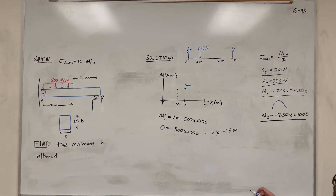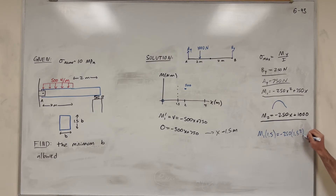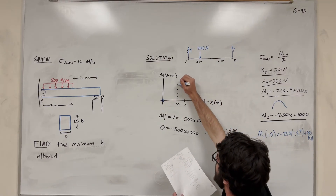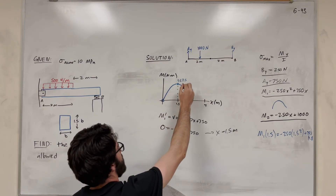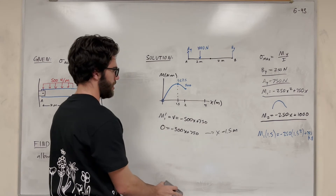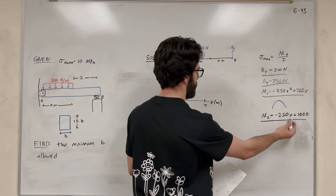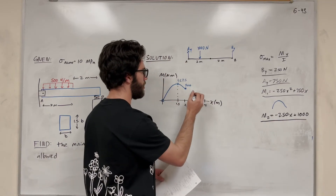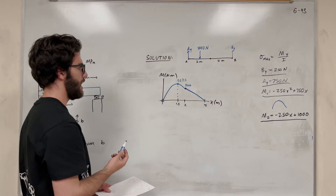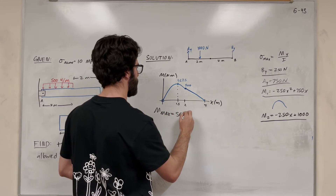Plugging X = 1.5 back into moment one: M1 = -250(1.5)² + 750(1.5) = 562.5 N·m. So the local max is at 562.5. Moment two is a straight line from 500 at X = 2 down to 0 at X = 4. The maximum moment overall is 562.5 Newton·meters.